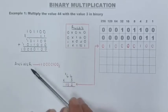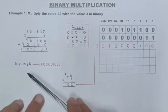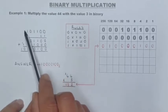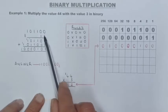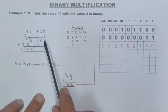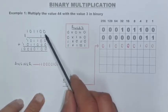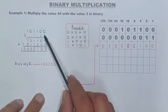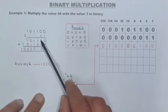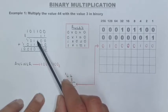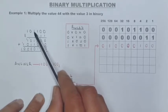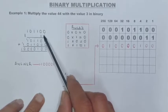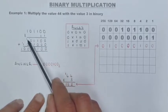So let's go ahead and do the actual calculation. Here is 44 in binary and 3 in binary. One times zero is zero. One times zero is zero. One times one is one. One times one is one. One times zero is zero. And one times one is one.